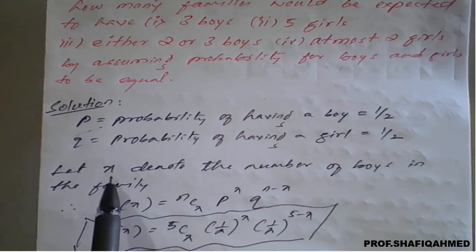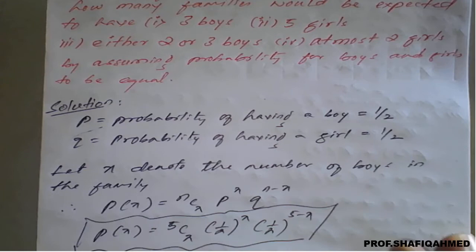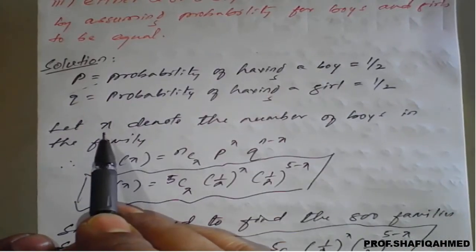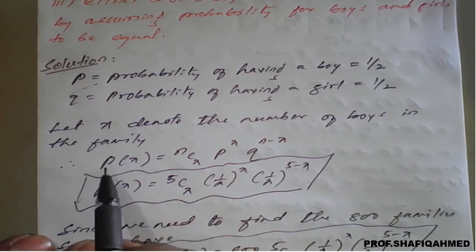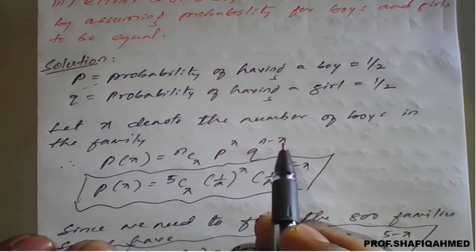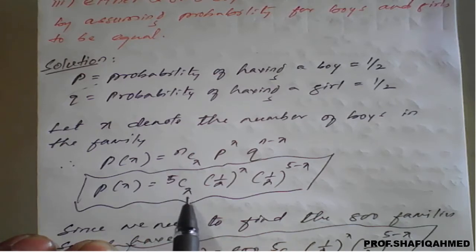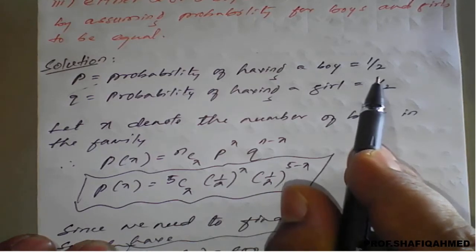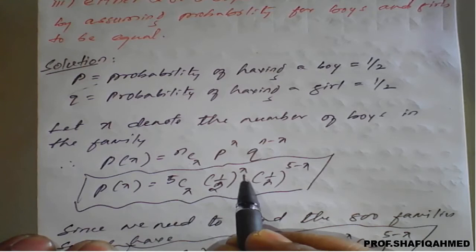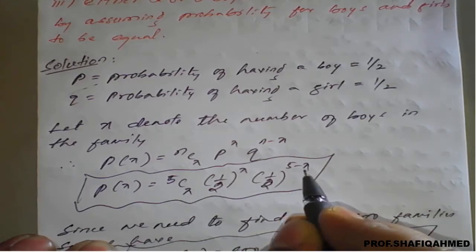Here I want to fix a random variable. Let x denote the number of boys — x belongs to the number of successes from this experiment. So x is denoting number of boys in the family. Whenever we use the value of small x, it should represent boys only. As per the binomial distribution, P(x) = nCx × p^x × q^(n−x). We know n = 5, so it is 5Cx × (1/2)^x × (1/2)^(5−x), where p = 1/2 (probability of boy) and q = 1/2 (probability of girl).